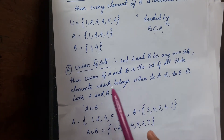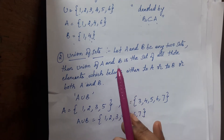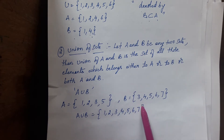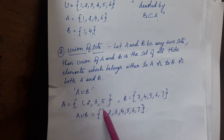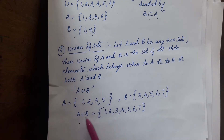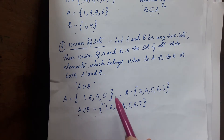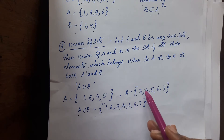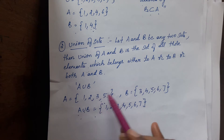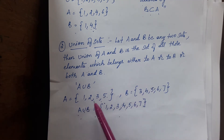Similarly, union of sets. Union of A and B means all the elements which belong to A and B together, written once only — that is A union B. That is all the elements 1, 2, 3, 4, 5, 6, 7. All elements which are in A and B we write once only; don't repeat any element twice. This is A union B.